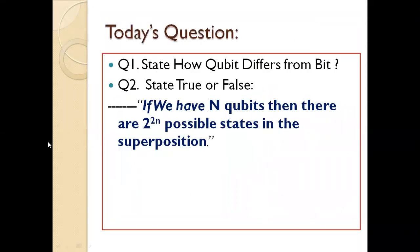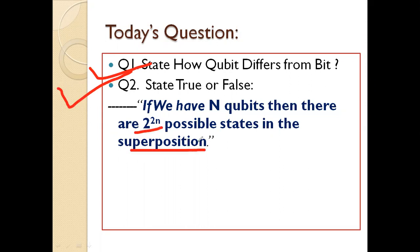That is what we have discussed in today's class: qubits, superposition in quantum computing, and the difference between bits and qubits. Here are today's questions: First, state how a qubit is different from a bit. Second, state true or false — if we have n qubits, then there are two to the power two-to-the-power-n possible states in the superposition. That's all for today's lecture. Take care and bye bye — Dr. Tipoy signing off.